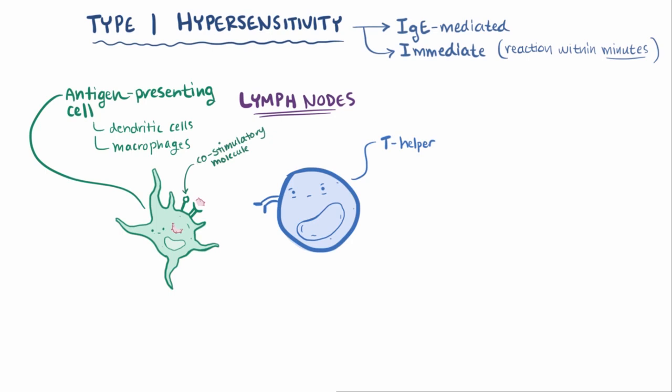Before the T helper cell sees the antigen, it's called a naive T helper cell, since even though it's built to recognize the antigen, it hasn't actually seen it before.